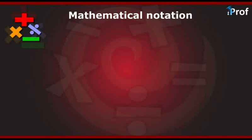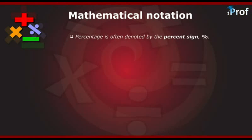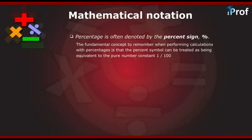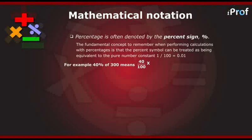Let us now understand the mathematical notation of percentages. Percentage is often denoted by the percent sign. The fundamental concept to remember when performing calculations with percentages is that the percent symbol can be treated as being equivalent to a pure number constant 1 by 100, which is equal to 0.01. For example, 40% of 300 means 40 divided by 100 into 300, which is equal to 120.